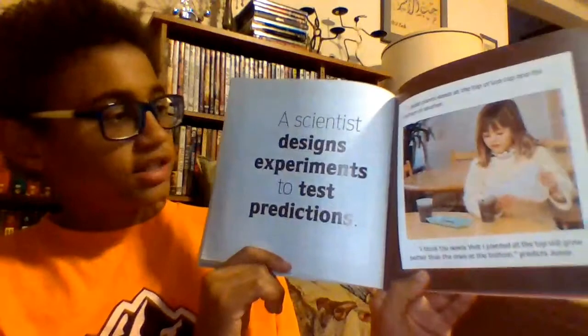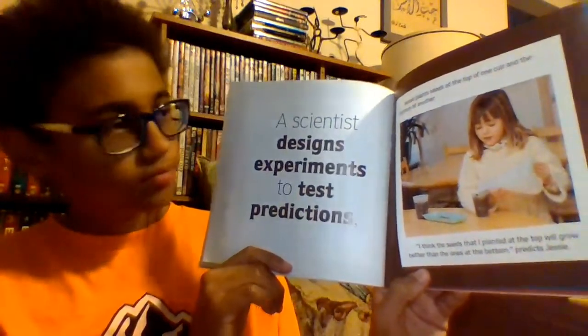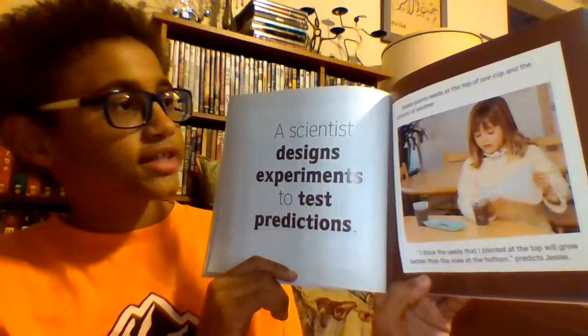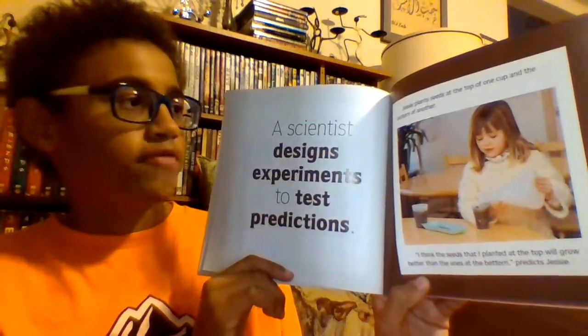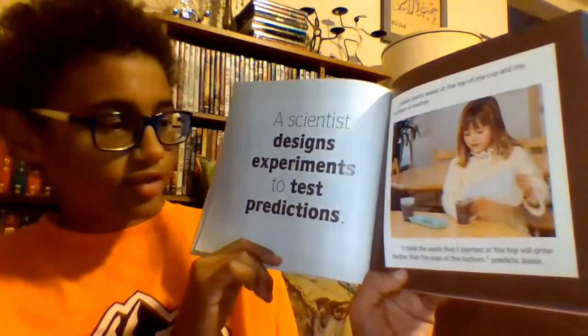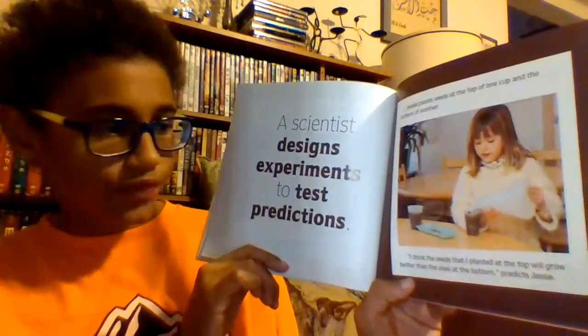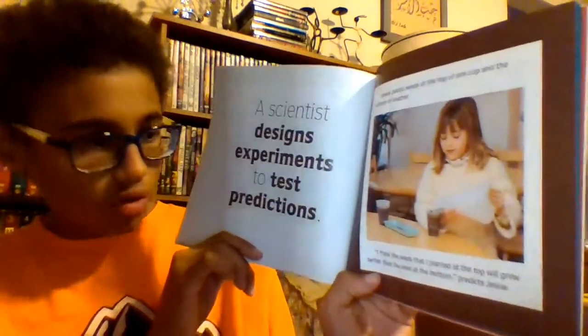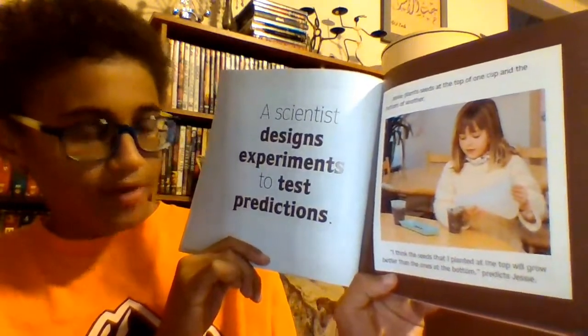A scientist designs experiments to test predictions. Jesse plants seeds at the top of one cup and the bottom of another. 'I think the seeds that I planted at the top will grow better than the ones at the bottom,' predicts Jesse.